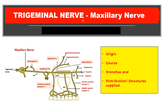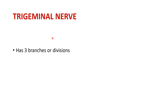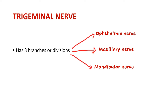This is the second video on the trigeminal nerve, and here we will consider the second division of the trigeminal nerve, that is the maxillary nerve. We will look at the origin, course, branches, and distribution or structures supplied by the maxillary nerve. The trigeminal nerve has three branches or three divisions: the ophthalmic nerve, the maxillary nerve, and the mandibular nerve. So maxillary nerve is the second branch or second division of the trigeminal nerve.